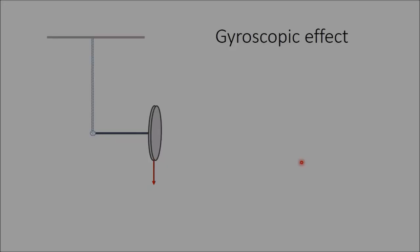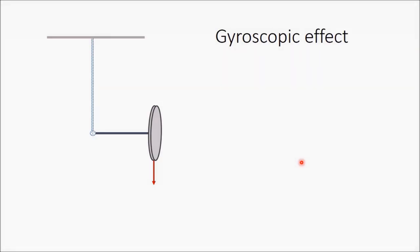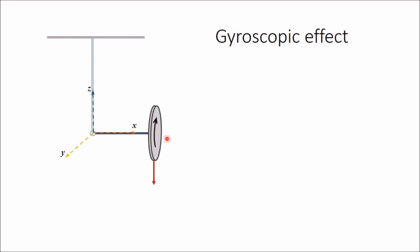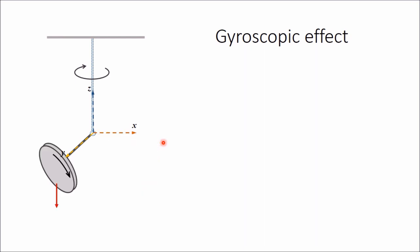In this video we will learn what is a gyroscopic effect. Consider a thin disc attached at one end of a shaft; the other end is supported by a rope. Because of the weight of the disc, the shaft will not remain horizontal and will fall down. But if the disc is spinning, instead of falling down the shaft itself starts rotating in a horizontal plane — this happens due to the gyroscopic effect.